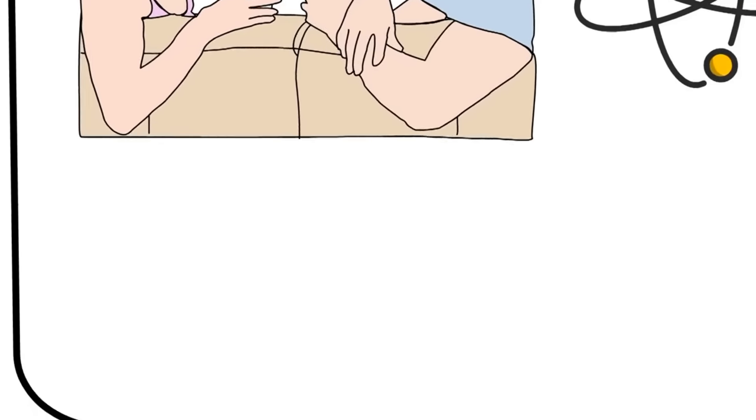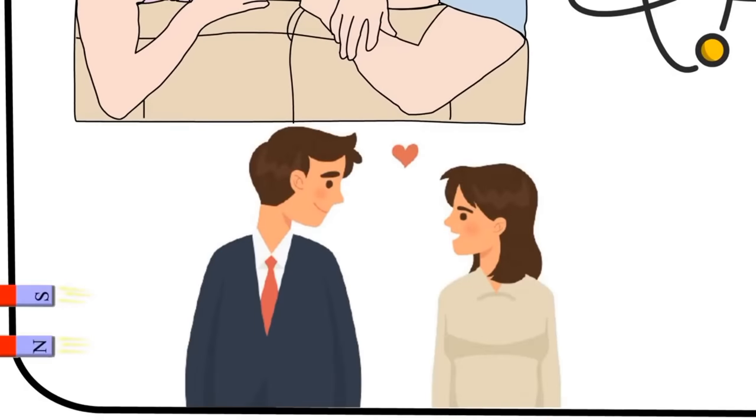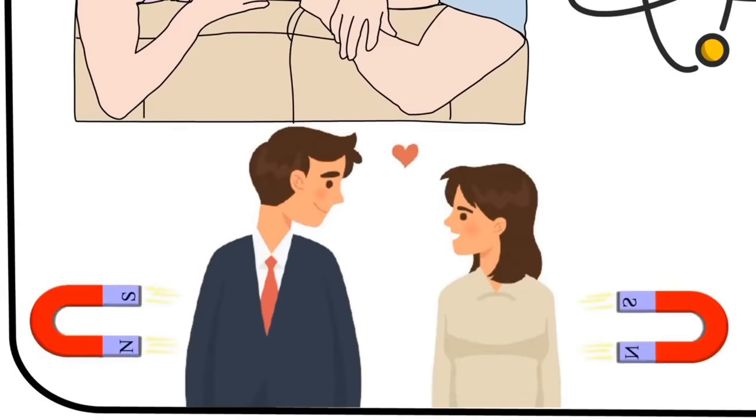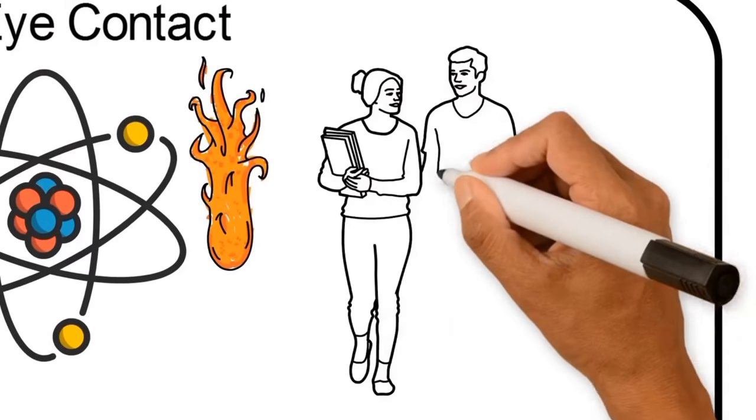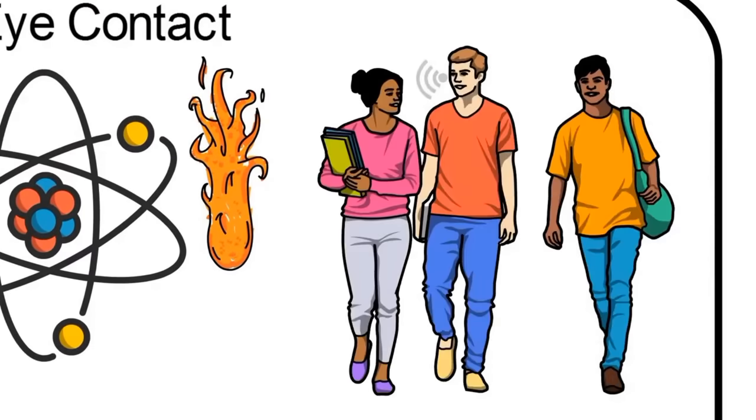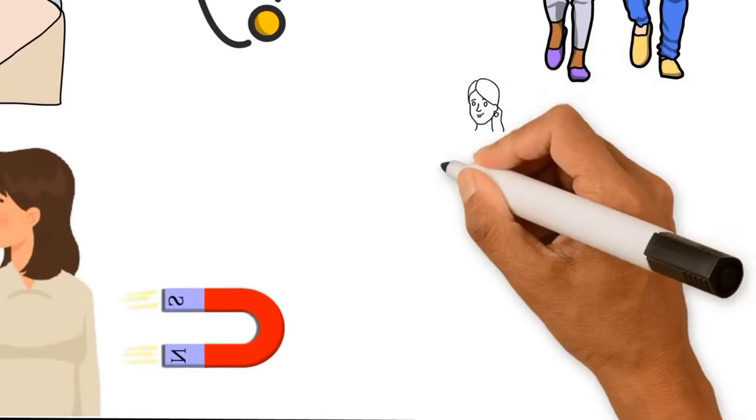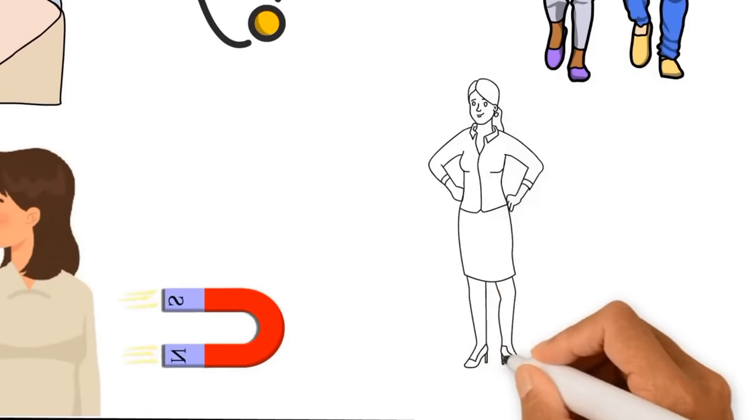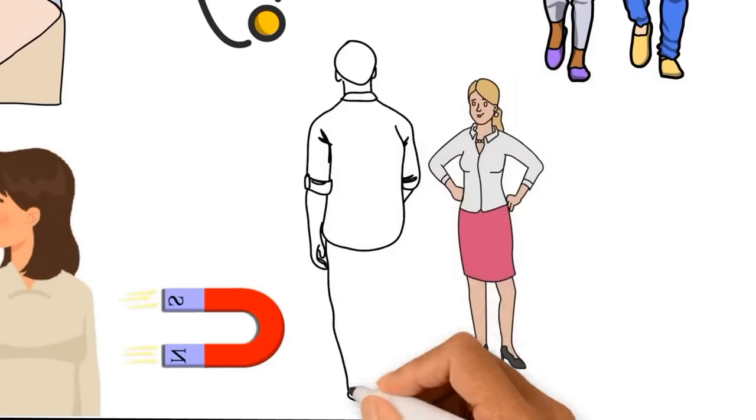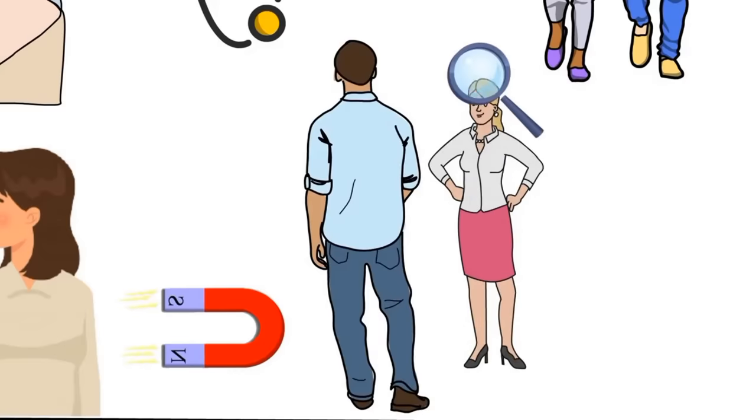Holding someone's gaze is one of the signs of sexual attraction and a way of letting them know you're interested in them. It says you're listening when they're speaking and you want to know more. Another form of eye contact is checking someone out. By tracing their body with your eyes or letting them see you check them out, you're letting them know you're interested in more than just their words.